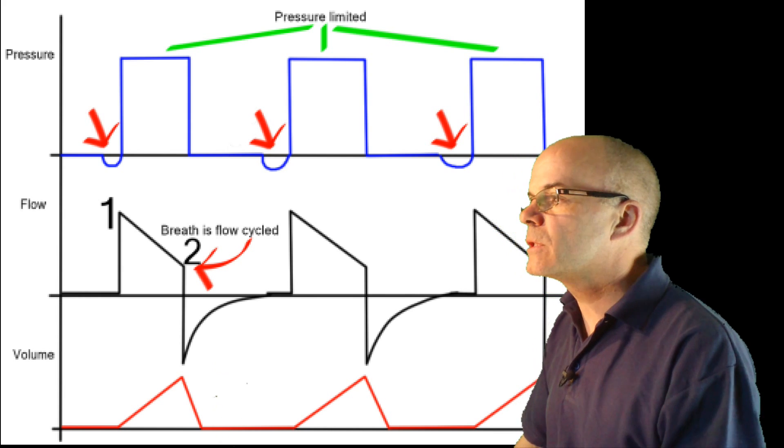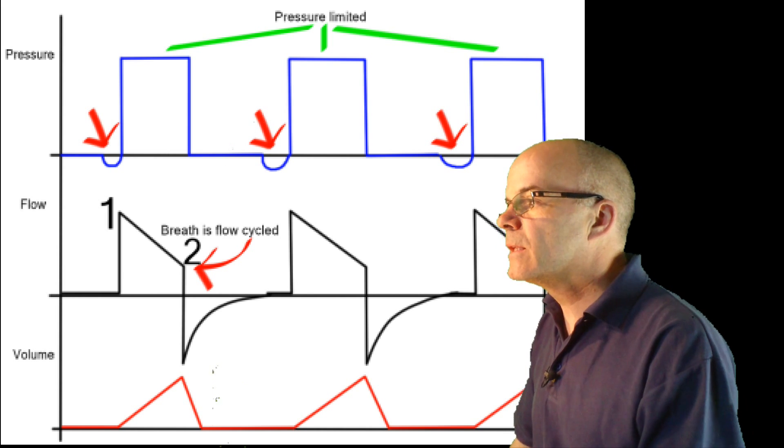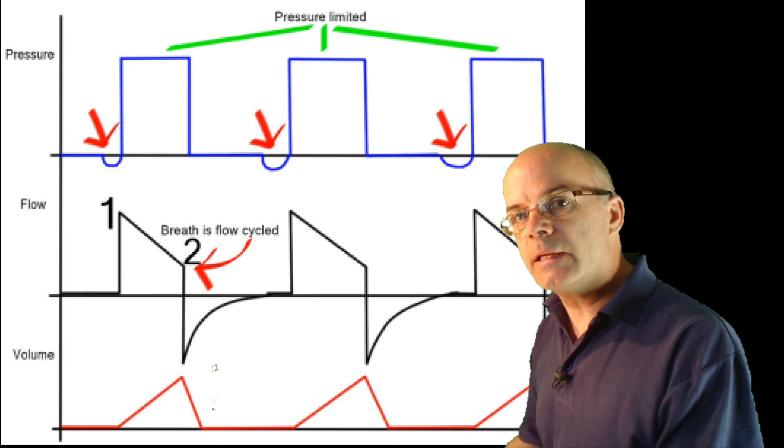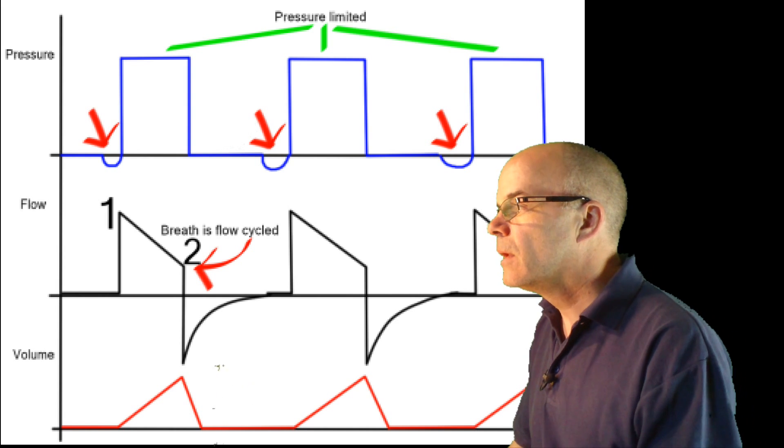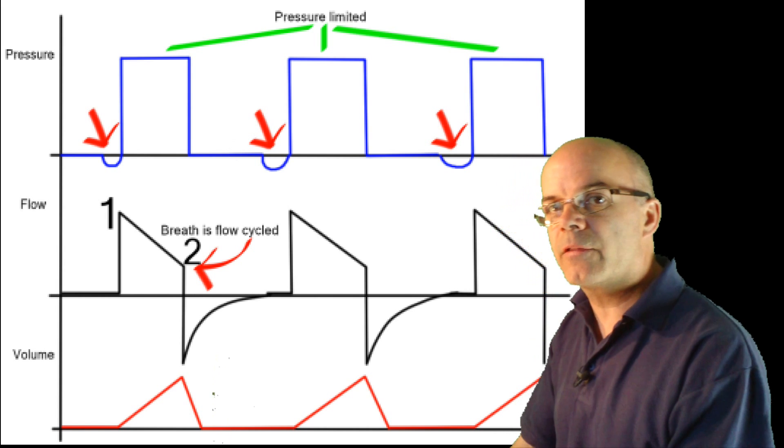There are a number of important points to note. If we look at the pressure graph, we can see a slight dip below the baseline before each breath, where each red line is pointing. This is the negative pressure created by the patient as they try to initiate a breath.